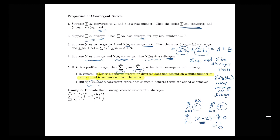Let's look at one example where we can apply some of these properties to find a sum. I have a sum from k equals zero to infinity of three times two-fifths to the k minus two times five-sevenths to the k. Looking at this, each of these terms inside my sum looks geometric, and the r values are less than one. So I'll split this up: the sum from k equals zero to infinity of three times (2/5)^k, minus the sum from k equals zero to infinity of two times (5/7)^k.